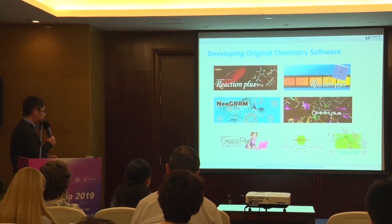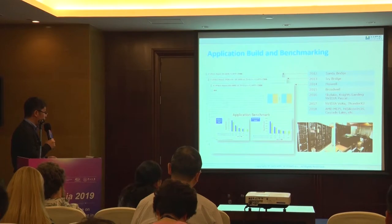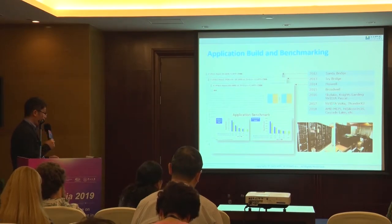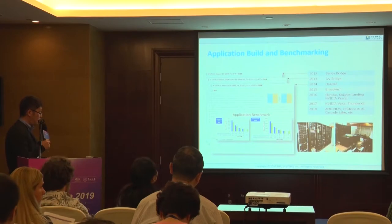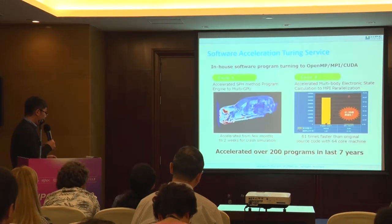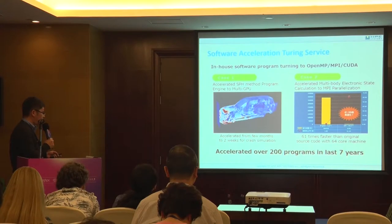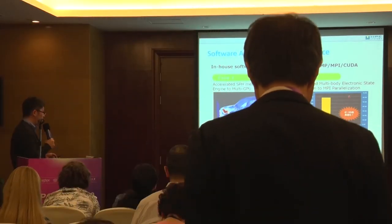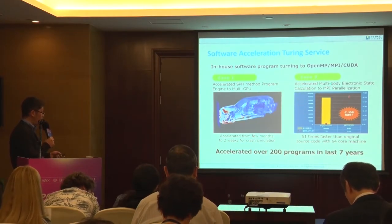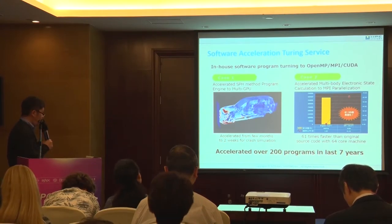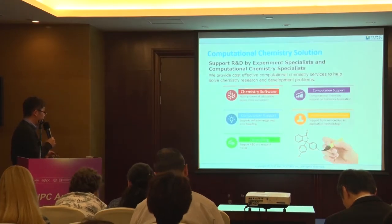We have our own originally developed software for chemistry, and we provide benchmarking and application builds based on new hardware architectures. Last year we did some work on the HiSilicon 1616, and now we are also working on Cascade Lake. We also provide software acceleration tuning services — where customers have their own in-house software programs and we do optimization for GPU, multi-GPU, or MPI parallelization. Over the last seven years we have done around 200 programs for acceleration, and we also provide cost-effective computational chemistry services to support research and development.